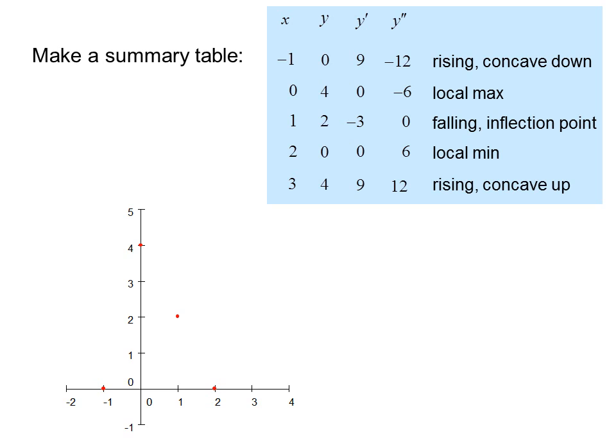At x equals 3: y is 4, y prime is 9 (the graph is rising fairly steeply), and y double prime is 12 (concave up). Now that we know what the graph looks like, we connect the dots to produce the final graph.